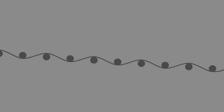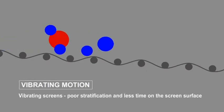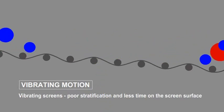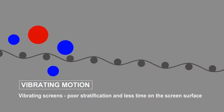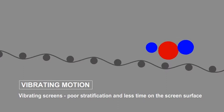Many screeners utilize a vibrating motion in order to convey material down the screen surface. A vibrating screener imparts a vertical force to move the material down the screen by throwing it forward. While the particles are in the air, they do not have a chance to find an opening, resulting in reduced screening efficiency.